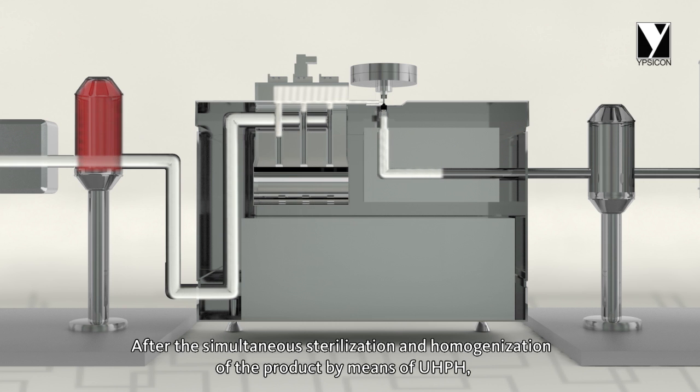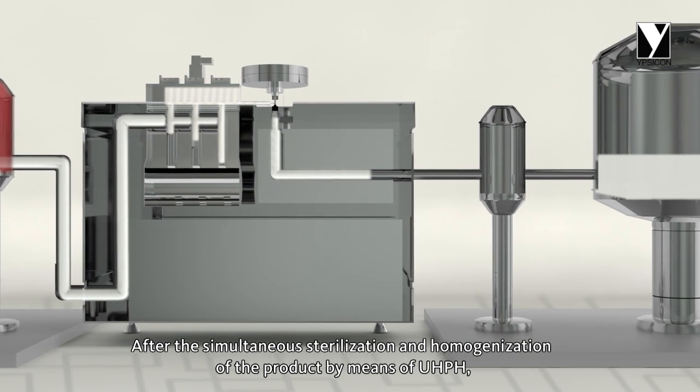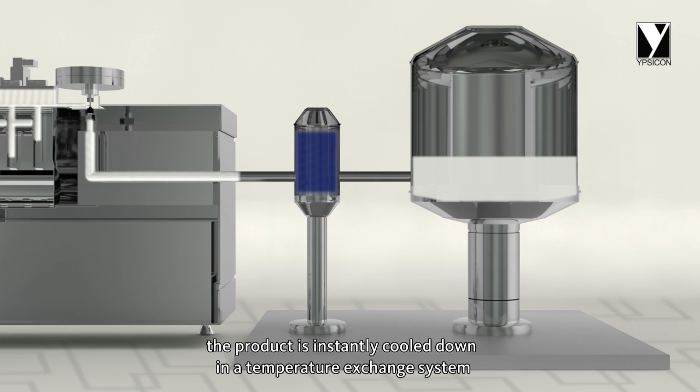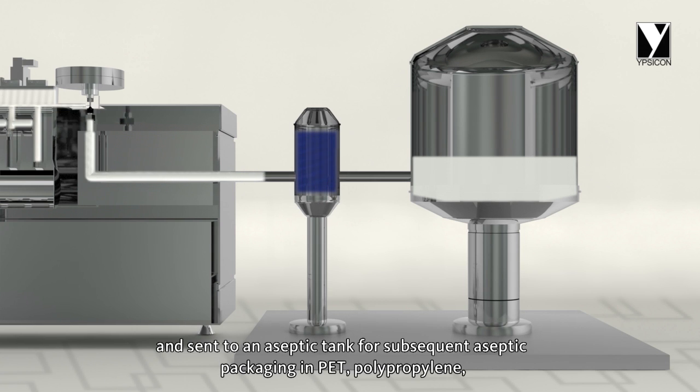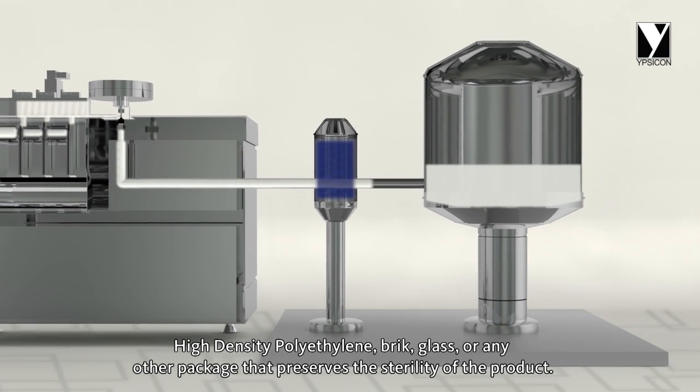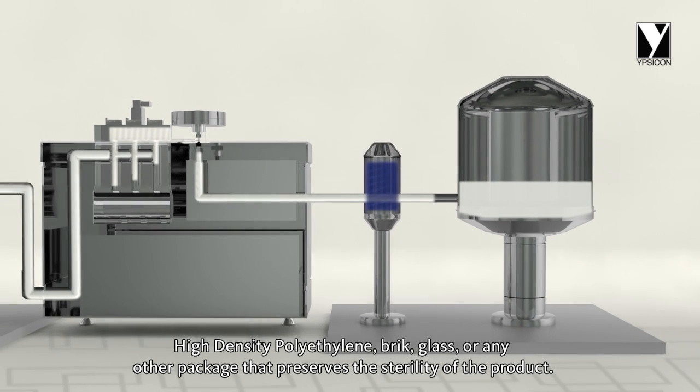After the simultaneous sterilization and homogenization of the product by means of UHPH, the product is instantly cooled down in a temperature exchange system and sent to an aseptic tank for subsequent aseptic packaging in PET, polypropylene, high-density polyethylene, brick, glass or any other package that preserves the sterility of the product.